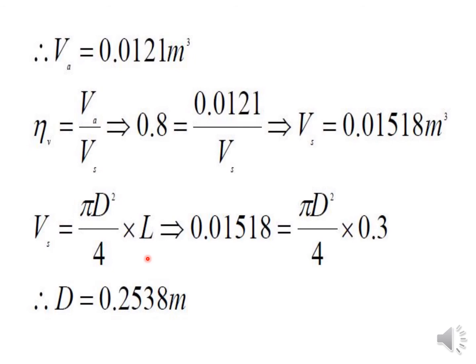The swept volume formula is Vs = (π/4) × d² × L, where d is the cylinder diameter and L is the stroke length. Here L = 0.3 m and Vs = 0.01518 m³ are known, so d is the only unknown. Solving gives d ≈ 0.2538 meters. This is the required cylinder size.